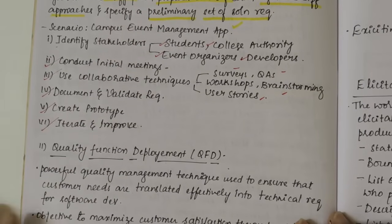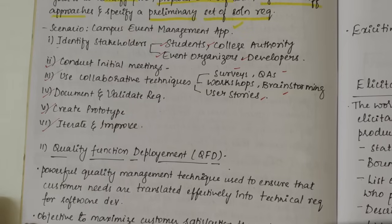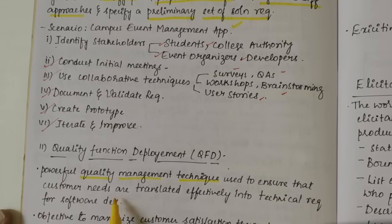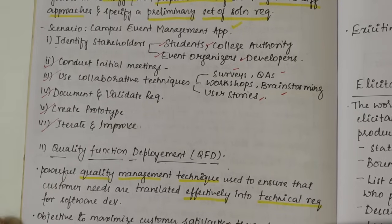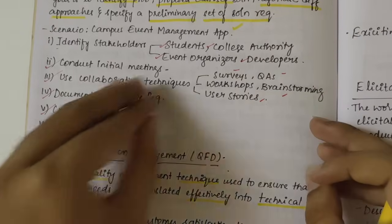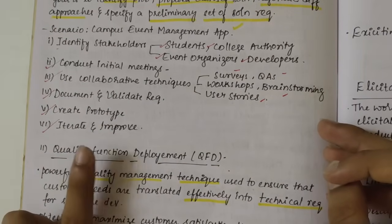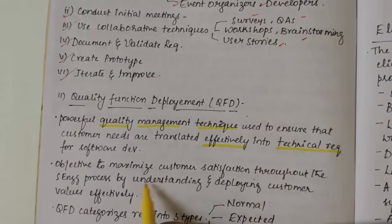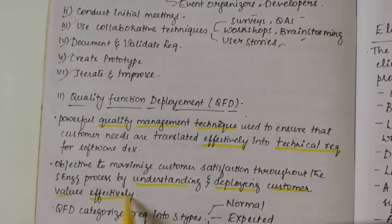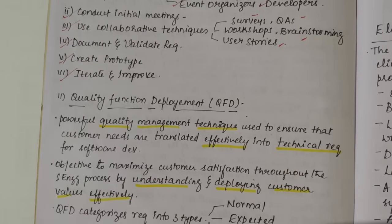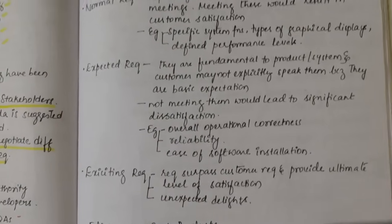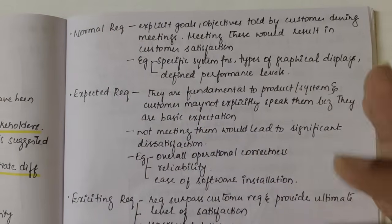Next we have Quality Function Deployment (QFD), which was also asked in the sample paper. QFD is a powerful quality management technique used to ensure that customer needs are translated effectively into technical requirements for software development. The objective is to maximize customer satisfaction throughout the software engineering process by understanding and deploying customer values efficiently. QFD categorizes requirements into three types: Normal, Expected, and Exciting. In an exam, we need to elaborate and write each with an example.